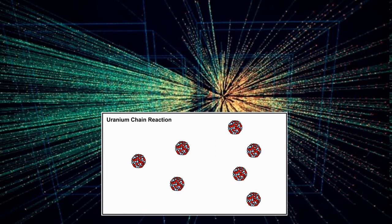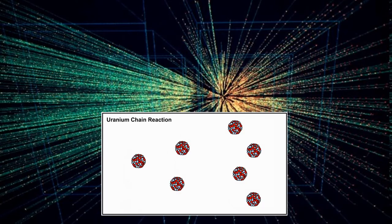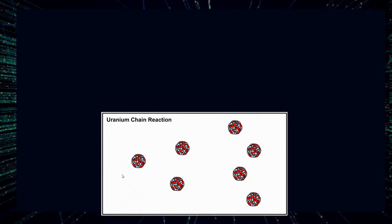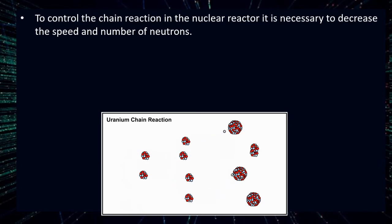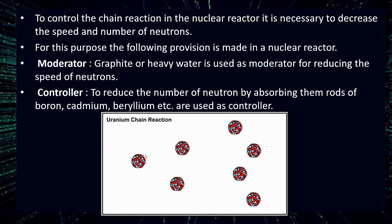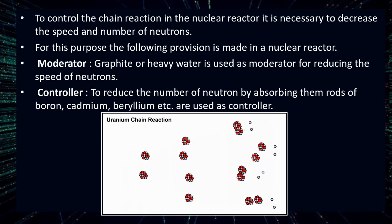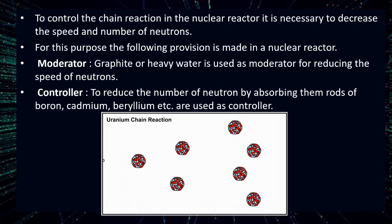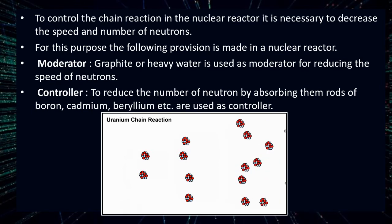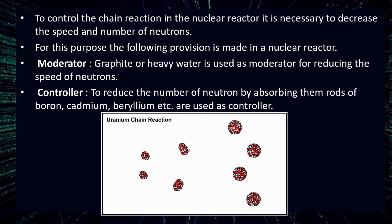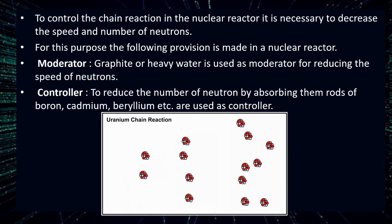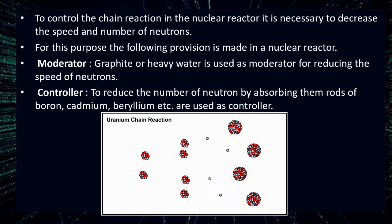A huge amount of energy is released during a chain reaction, and if it is not controlled it can lead to explosion. To control the chain reaction in a nuclear reactor, provisions are made. We can either decrease the speed of neutrons or decrease the number of neutrons. Moderators using graphite or heavy water reduce the speed of neutrons. Controllers reduce the number of neutrons by absorbing them — rods of boron, cadmium and beryllium absorb excess neutrons and prevent them from bombarding further Uranium atoms.